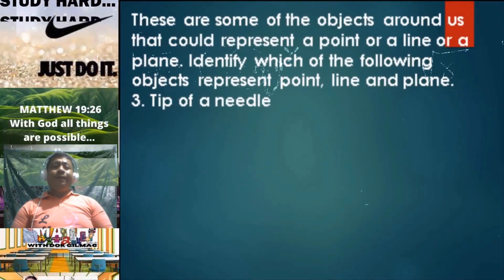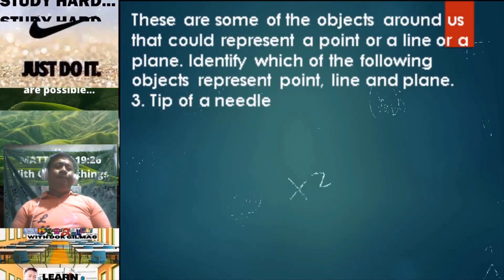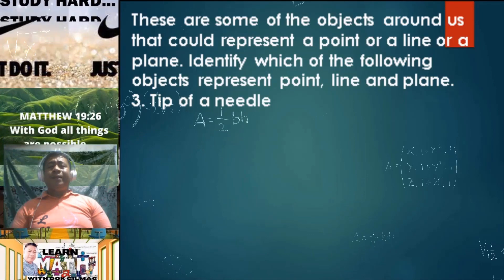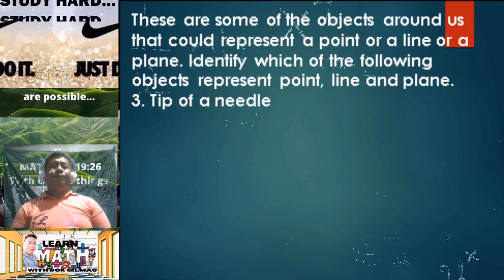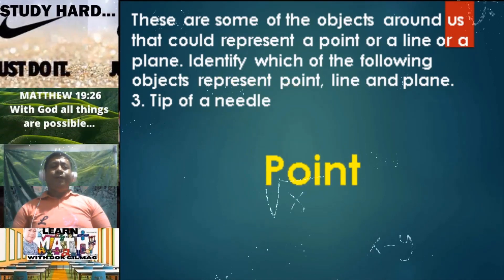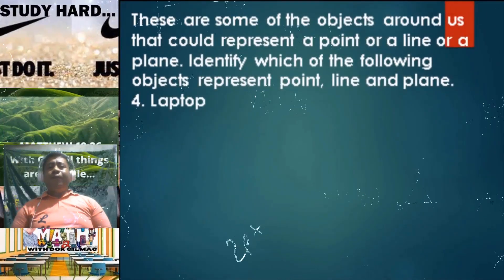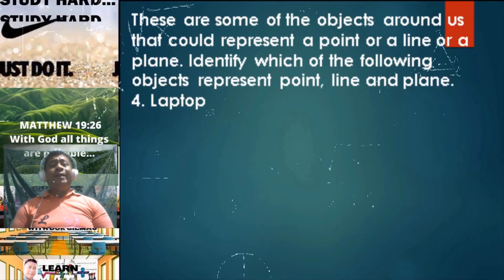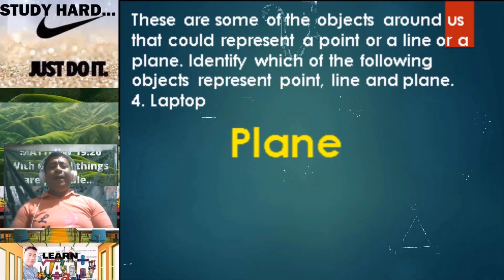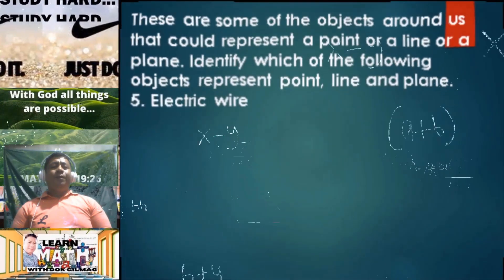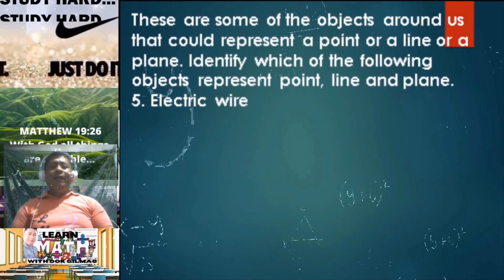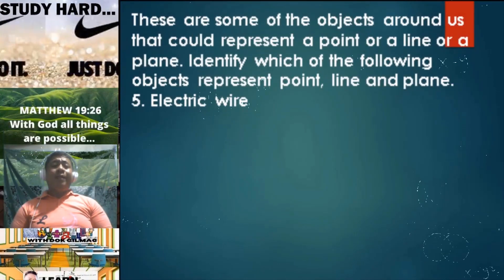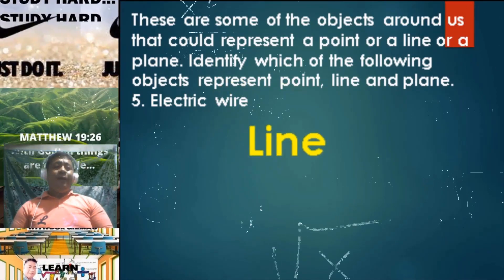Number three: tip of a needle — it's a representation of a point. Number four: laptop — laptop is a representation of a plane. Number five: electric wire — electric wire is a representation of a line.